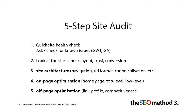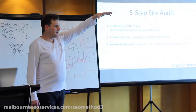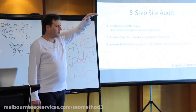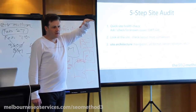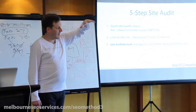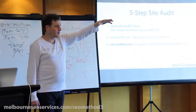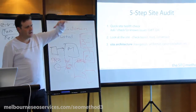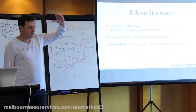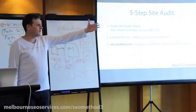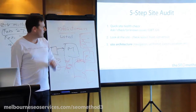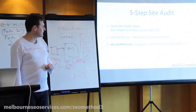Then we take the 10,000-foot view and look at the site architecture. Architecture plays a key role, particularly as the site gets bigger — it becomes really important. So we want to look at the navigation, the URL formatting, and whether they've got canonicalization sorted out, along with all those other important structural things.